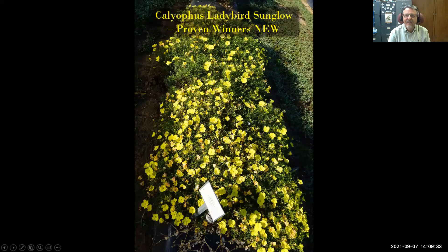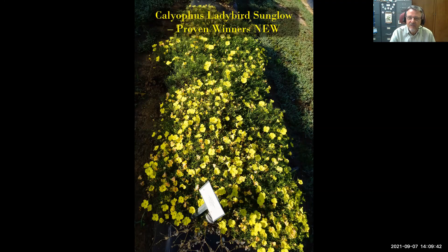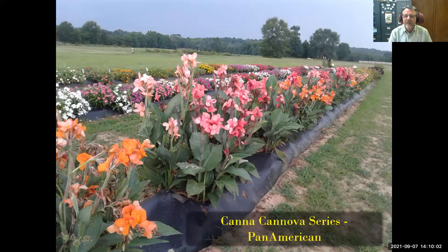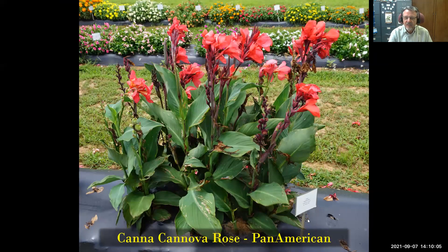Calibrachoa Ladybird Sun Glow has performed really well in full sun and heat, flowering consistently through the summer — a great new addition and a tough species good for Texas. The Canna Canova series from Pan American continues to amaze me; you can get a spectacular plant like this by mid-summer from a four-inch pot planted in the spring.